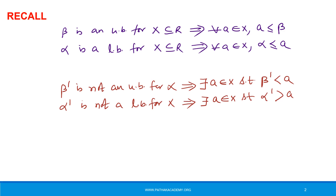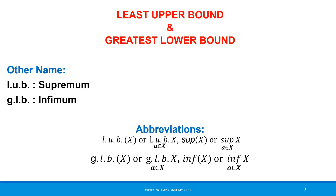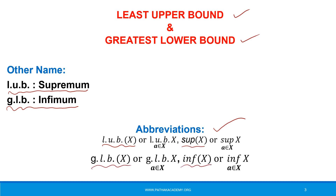Now let us move to know about the least upper bound and greatest lower bound. These have different names too. The least upper bound is known as supremum and the greatest lower bound is known as infimum. The abbreviations we use are lub X or sup X, and glb X or inf X.